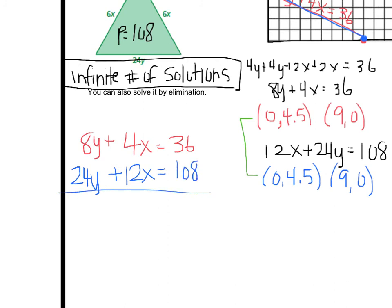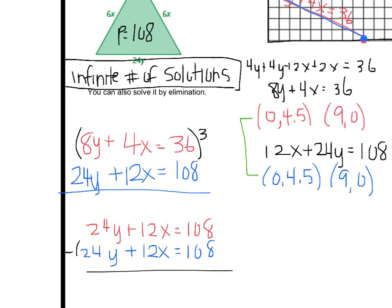And if I want to use the elimination technique, I need to make one of the coefficients either the same or opposite. So I will choose to make the, I don't know, who cares? I'll make the 4 match up with the 12. So I'm going to multiply this whole thing by 3. So I would get 24y plus 12x equals 108, and then line it up with the other one, which is 24y plus 12x equals 108, and then if you go to then subtract them, this cancels, this cancels, and this cancels, and you have 0 equals 0.